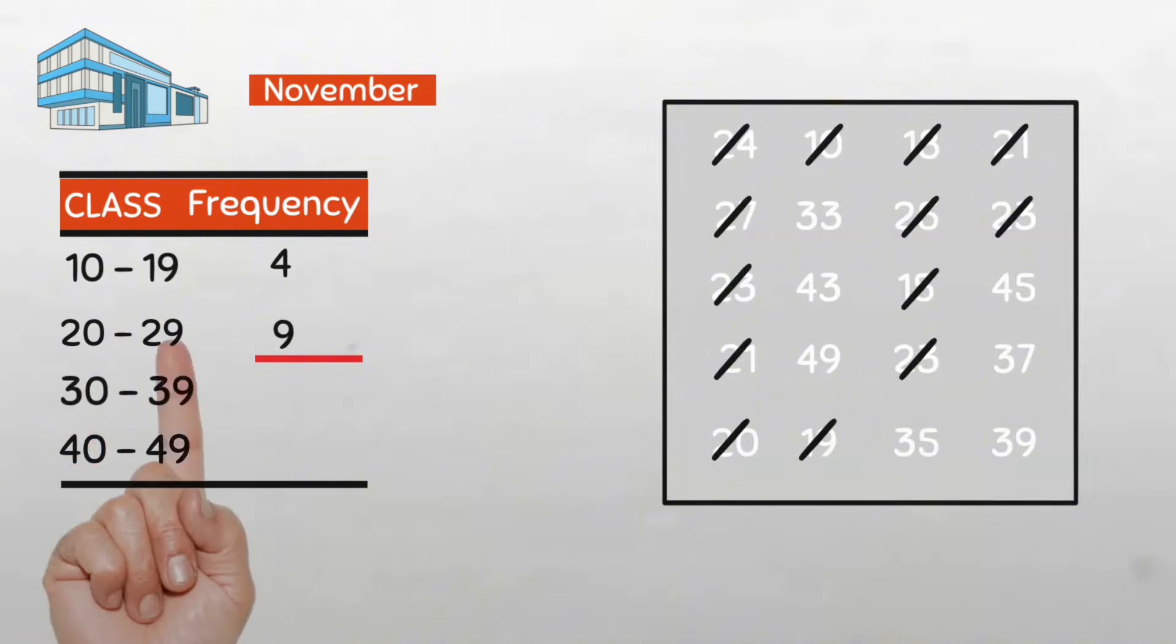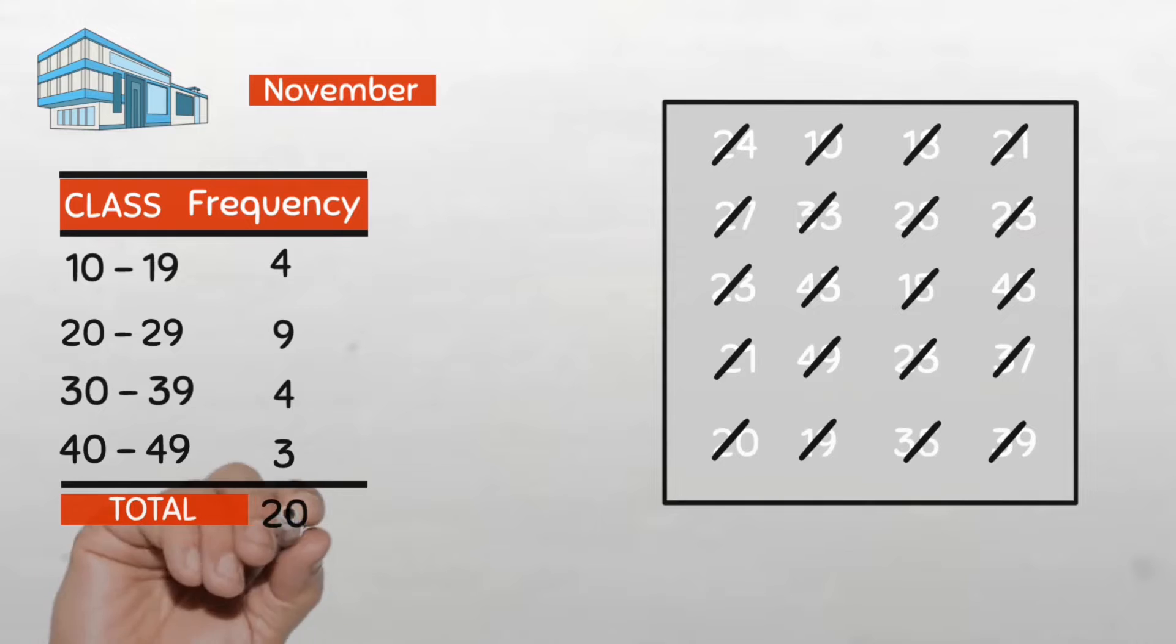And then for the 30 to 39 class, let's count. So here, here, here, and here. That's four. And for the last class, the 40 to 49 class, we have 1, 2, and 3 values, giving a total of 20 values.